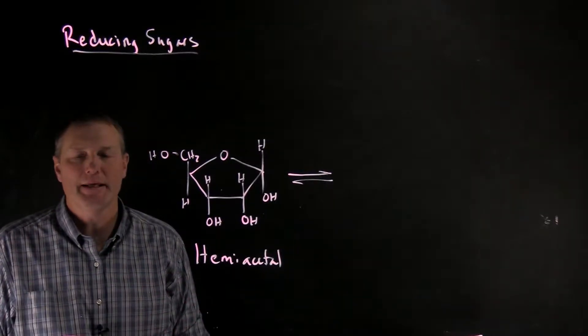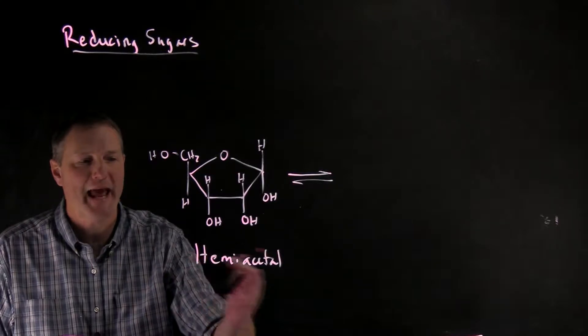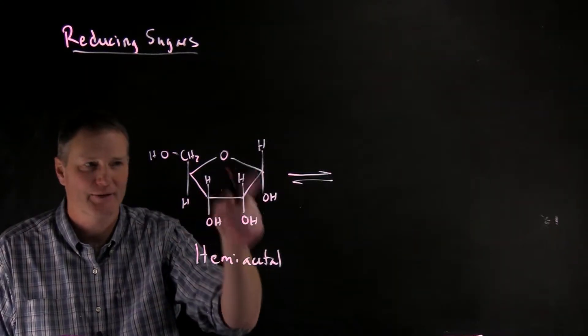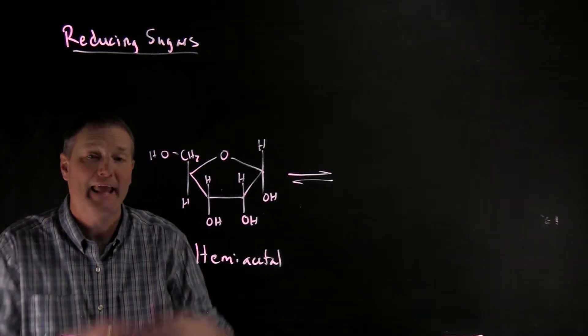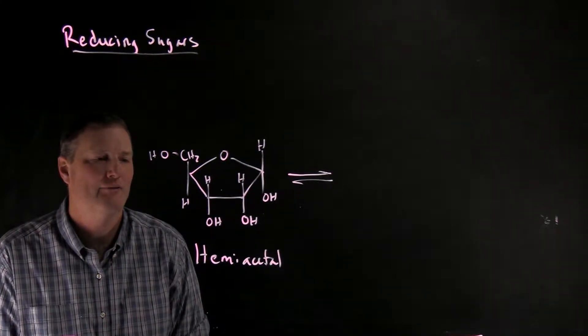Reducing sugars can only really occur if the hemiacetal form, or the cyclic form that we talked about previously, can in fact open up to its open chain aldehyde form.